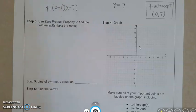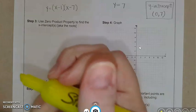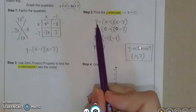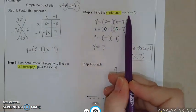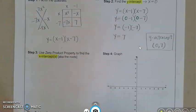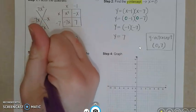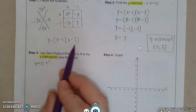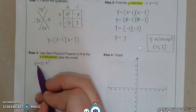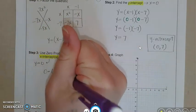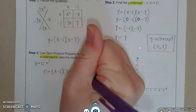Next, step number three. Use the zero product property to find the x-intercepts, which also is known as, aka, the roots. And just like how I put a little reminder up here that when finding the y-intercept we remember that x is zero, same idea. When finding the x-intercept we remember that y equals zero. So I'm going to rewrite this except instead of putting a y I'm going to put a zero.